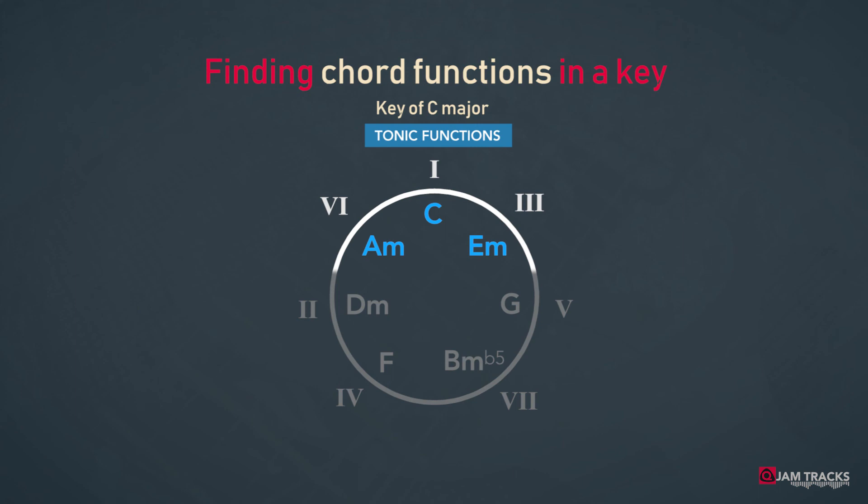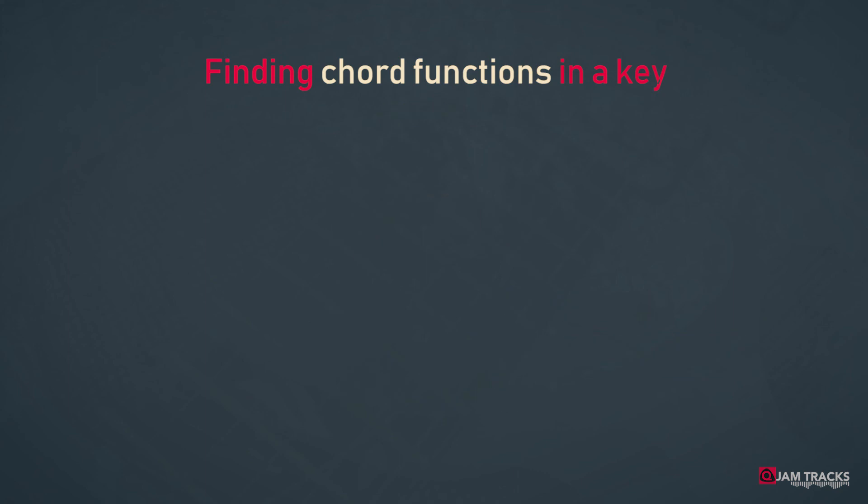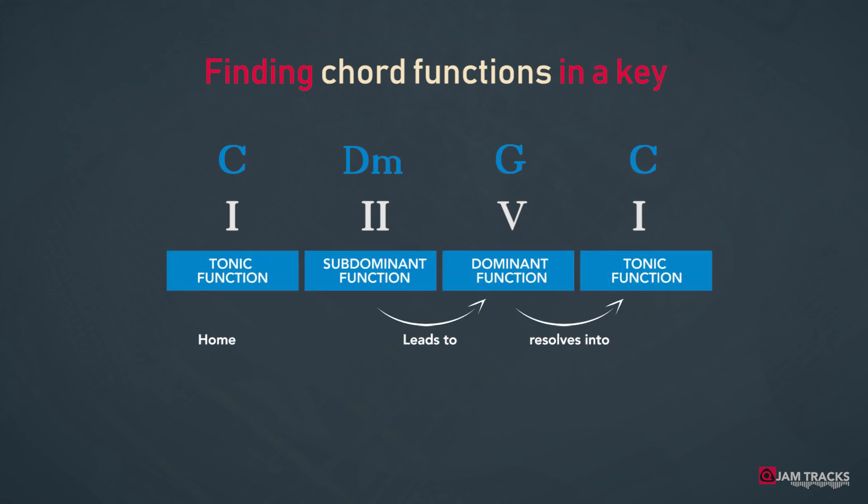So C, A minor and E minor belong to the tonic group. Where F and D minor belong to the subdominant group. B diminished and G major belong to the dominant group. A traditional progression which works fine is 1, 2, 5 and 1. So it will be C, D minor, G, C. And it creates a home chord, a lead to the dominant. The dominant is a tangent chord that resolves to the home chord.